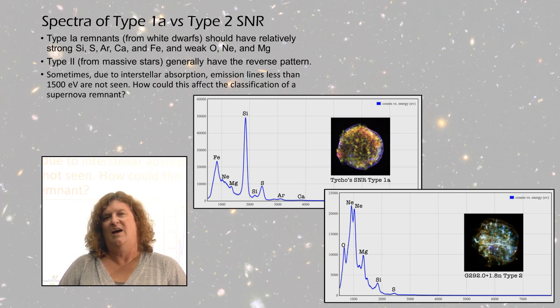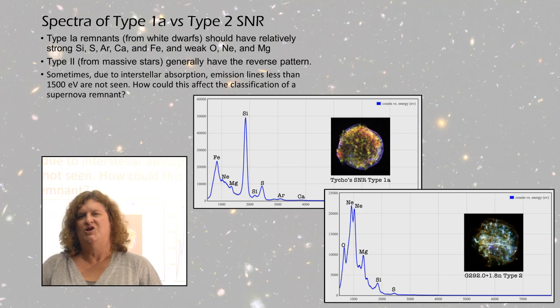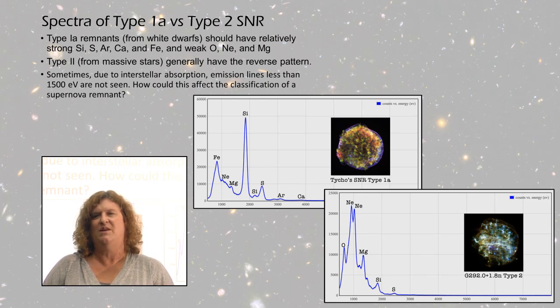Other things that students can look at: in a Type 1a, there will be no core remaining in the middle. The white dwarf is completely destroyed during that supernova. But in a Type 2, you are going to have a core remnant.